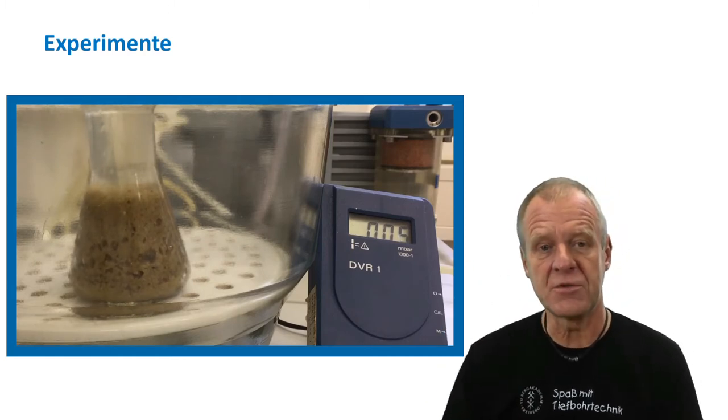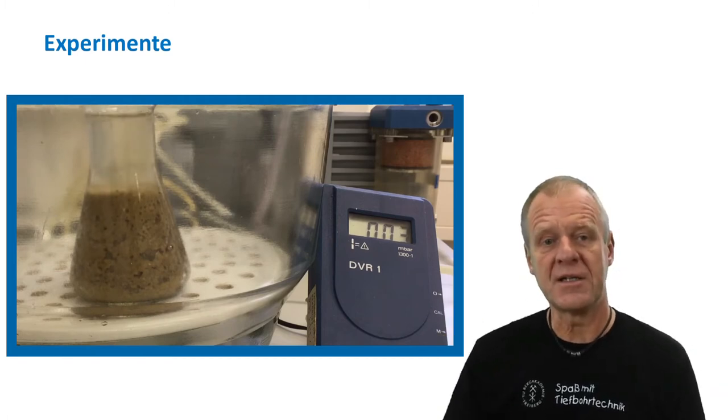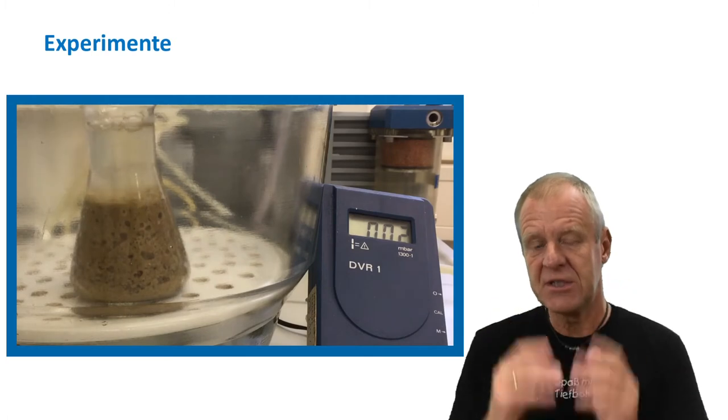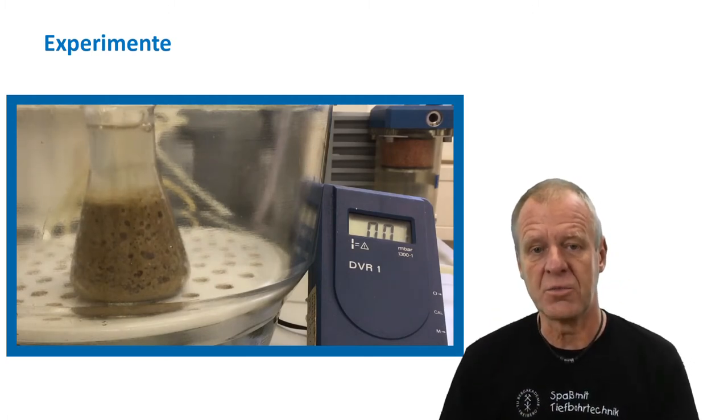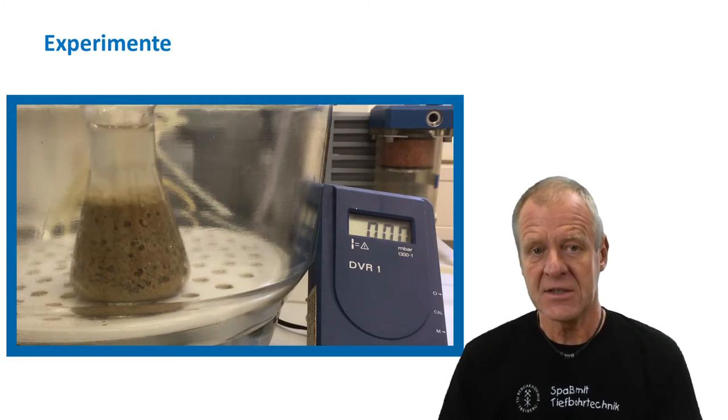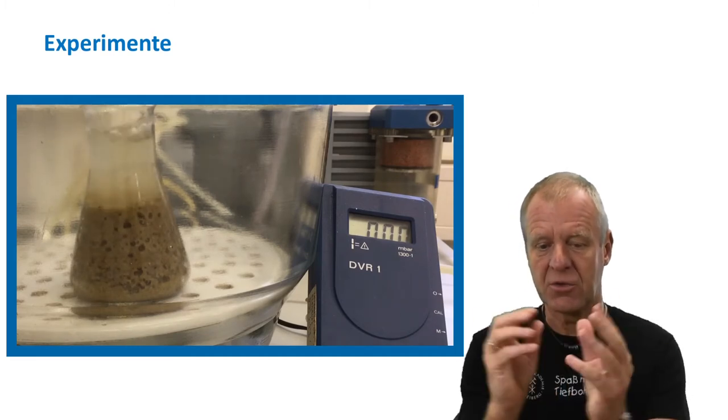At first, one does not suspect that there's something else in it. But there are many small air bubbles trapped between the sand grains. If we now apply a vacuum to the glass, we see that the hidden microscopic gas bubbles expand and become much bigger, so they can leave the pore space and rise to the top.